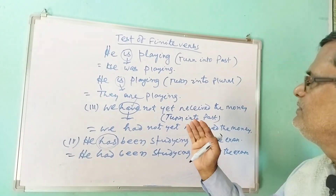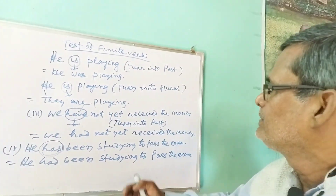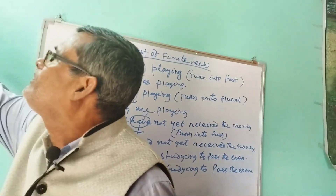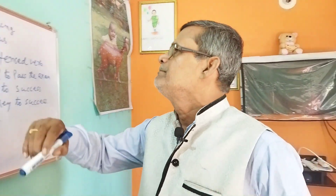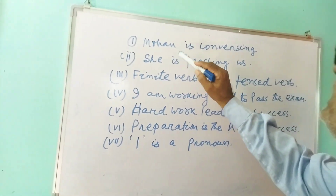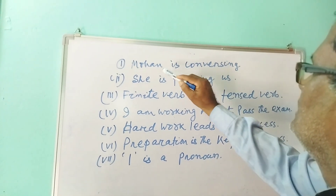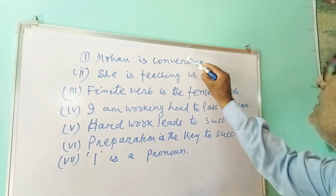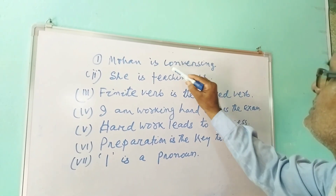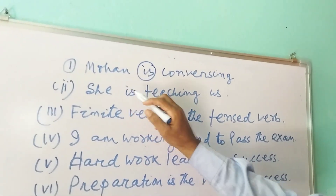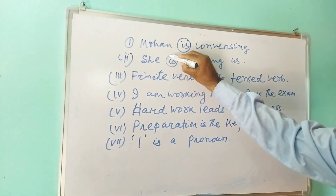Today I will give you some questions from my own mind, apart from activity 1, so you can learn from other examples and get more practice. You just find and identify the finite verb and write them down. For example: 'Mohan is conversing' — identify the finite verb in this sentence.